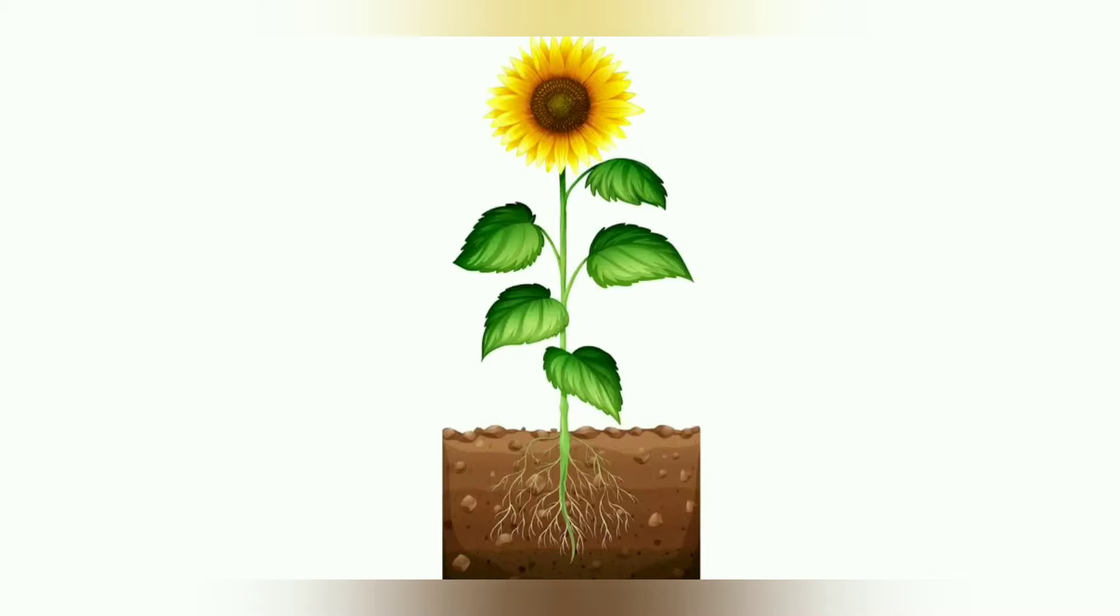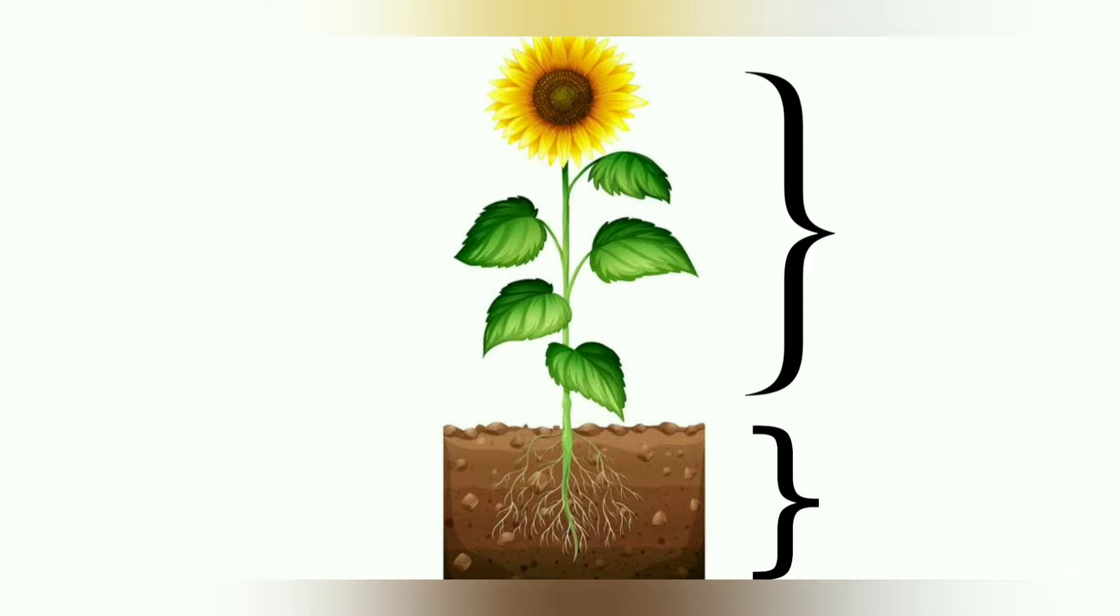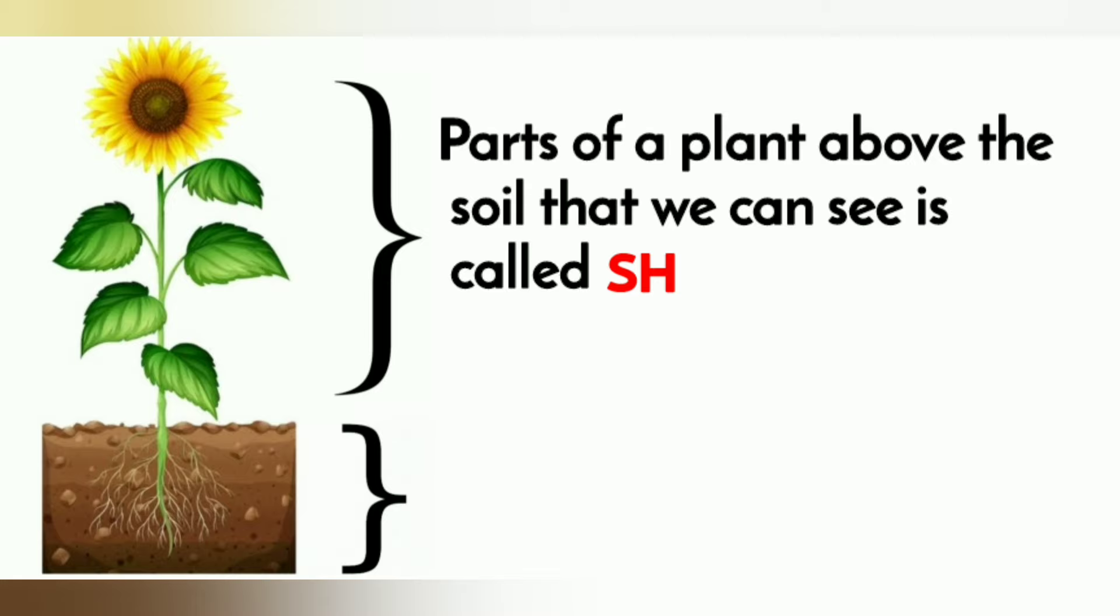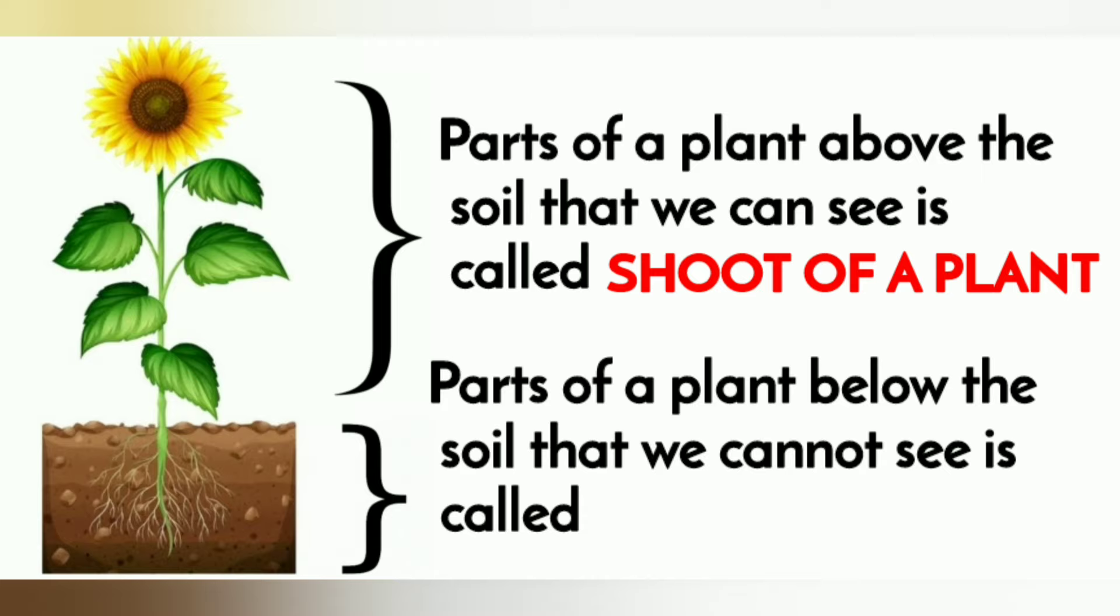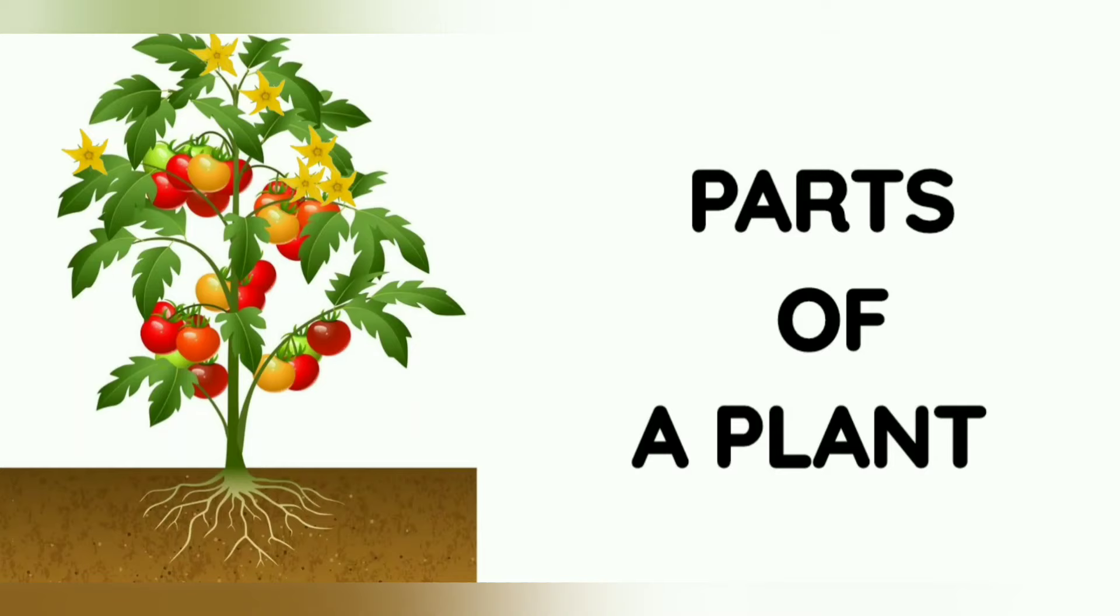Some parts of the plant are above the ground while some are below the ground. The parts of the plant above the soil that we can see is called shoot of a plant. Parts of a plant below the soil that we cannot see is called the root of a plant.